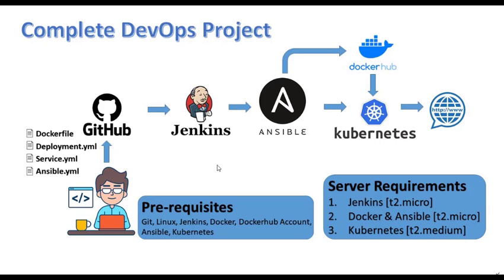For this we require a minimum of four instances or hosts, that is four servers. I'm implementing this whole job in AWS, using T2 micro for my Jenkins server, Docker and Ansible server, and T2 medium for Kubernetes.